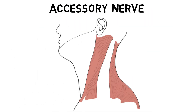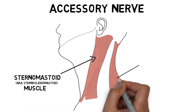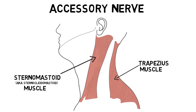The accessory nerve is primarily considered a motor nerve that supplies two muscles: the sternomastoid muscle and the trapezius muscle. The sternomastoid helps to turn your head to the side, as well as bend your neck down or to the side. The trapezius is involved with the movement of the neck and scapula, or shoulder blade, and is important to a variety of shoulder and arm movements, such as shrugging your shoulders or raising your arms above your head.